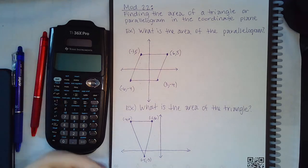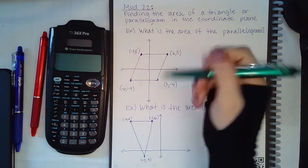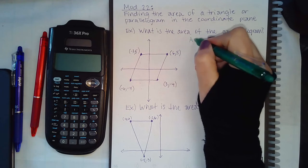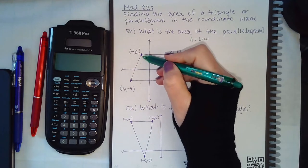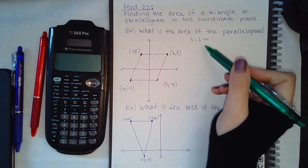This is Module 22, the first of the college algebra modules. The first topic is finding the area of a triangle or parallelogram in the coordinate plane. What is the area of the parallelogram? The area of a parallelogram is found by length times width, so we basically need to find those two dimensions.